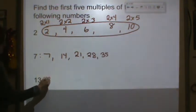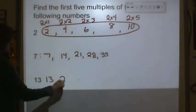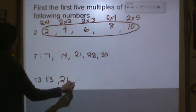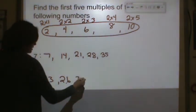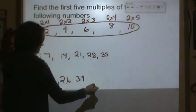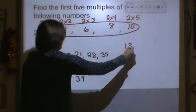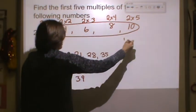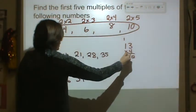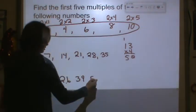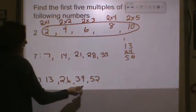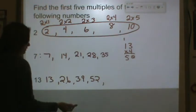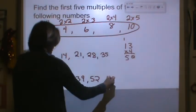13. 13 times 1 is 13. 13 times 2 is 26. 13 times 3 is 39. 13 times 4, I don't know that off the top of my head, so I'm going to have to do some quick multiplication. So it would be 52. And 13 times 5 would be 65.